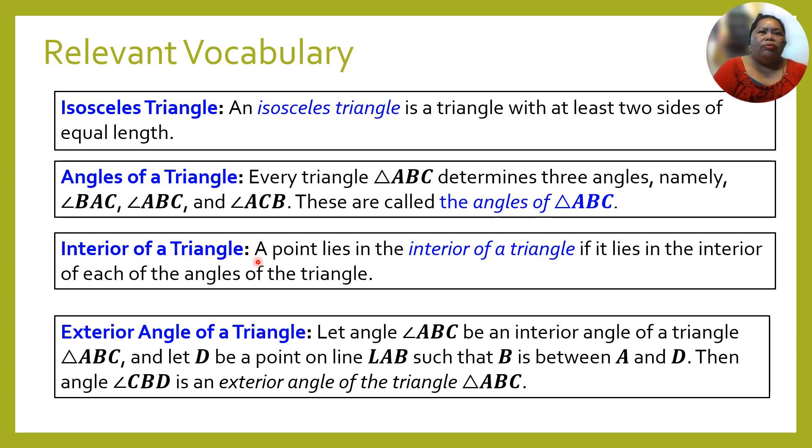For interior angle of a triangle, a point lies in the interior of a triangle if it lies in the interior of each of the angles of a triangle. Then we have exterior angles of a triangle. Let angle ABC be an interior angle of a triangle ABC, and let D be a point on line AB such that B is between A and D. Then angle CBD is an exterior angle of the triangle ABC.